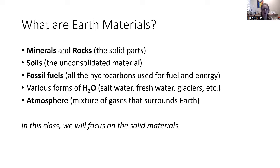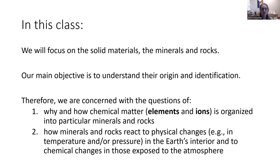Earth materials are those things that Earth is made of, excluding the biological components mostly. So we're talking about the solid parts — the rocks and the minerals, the soils, the fossil fuels, the water, the atmosphere. In this class, we're mainly going to focus on those solid materials, the minerals and the rocks. To do so, we have to understand their origin and how we can identify them — how they're made and what they're made out of at the atomic level, what elements they're made out of, what ions are bonded together.